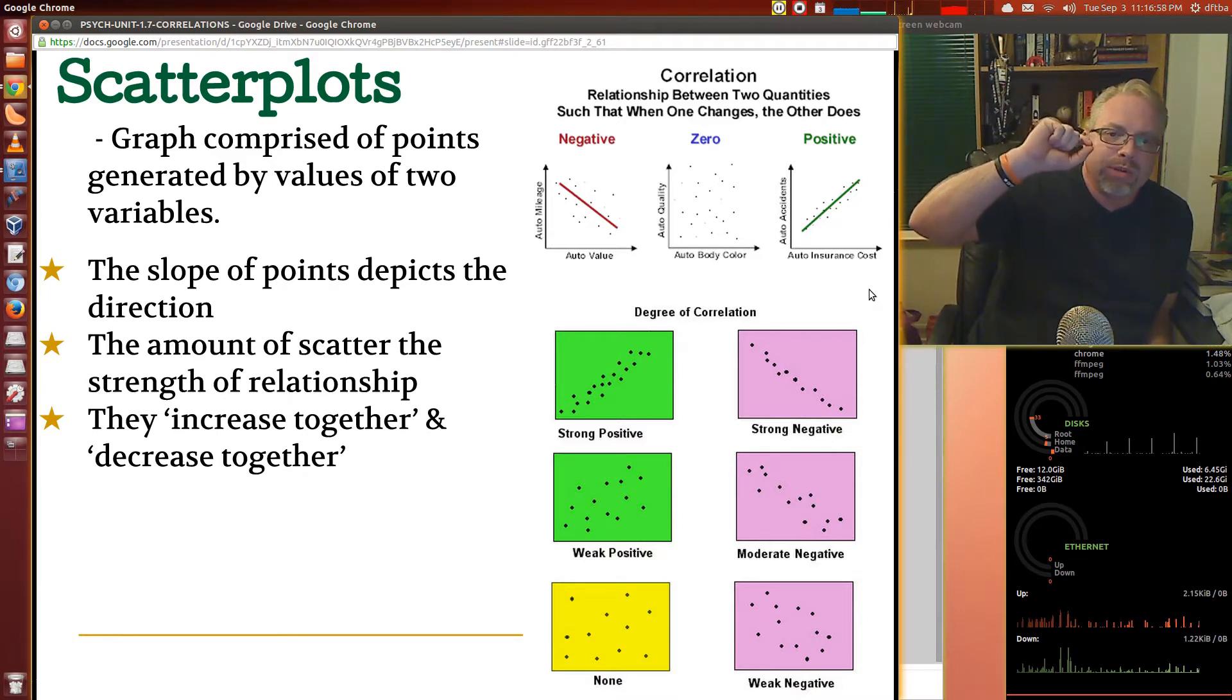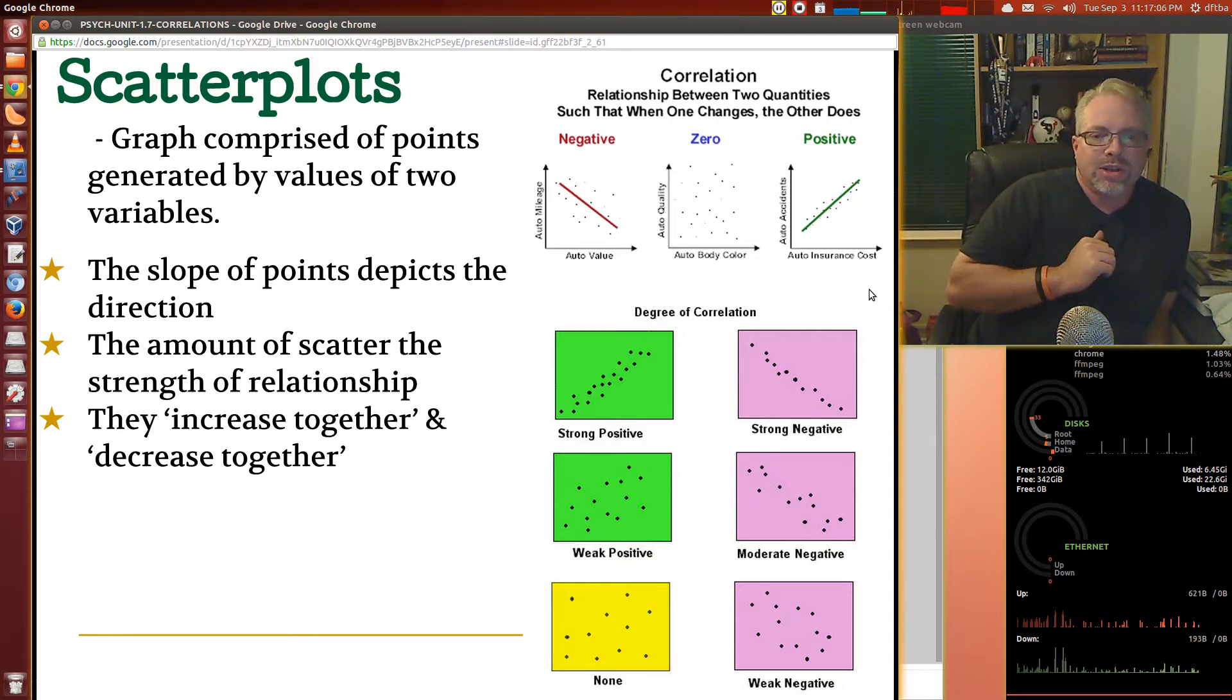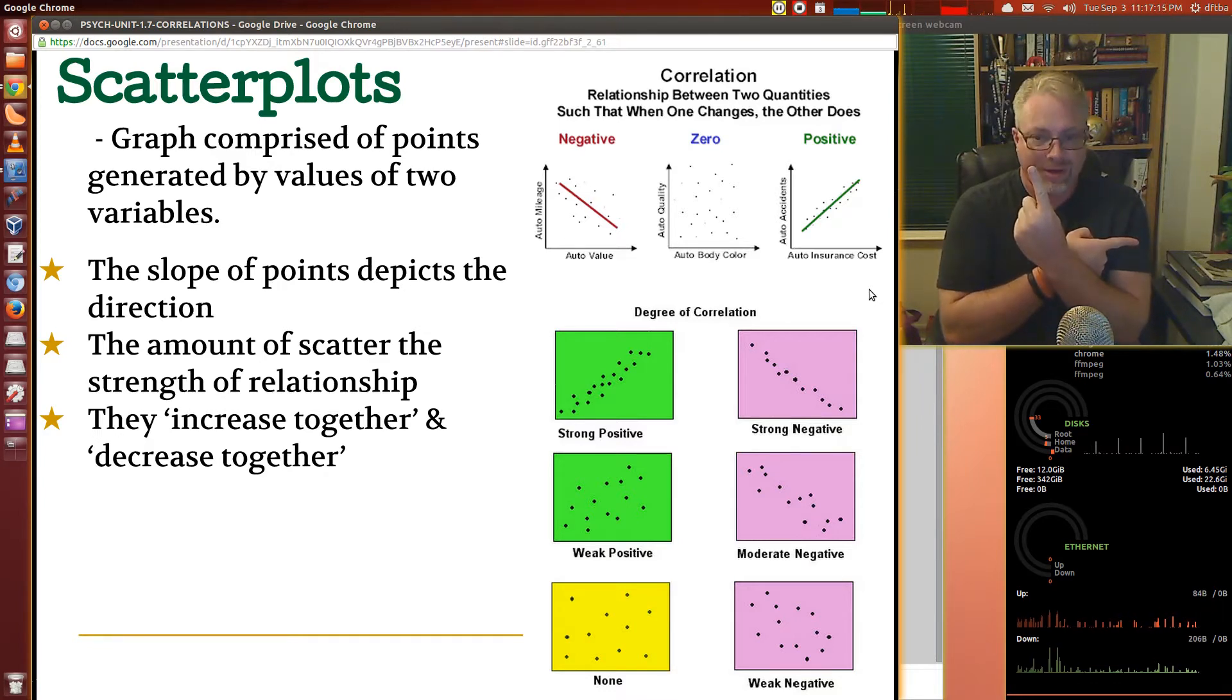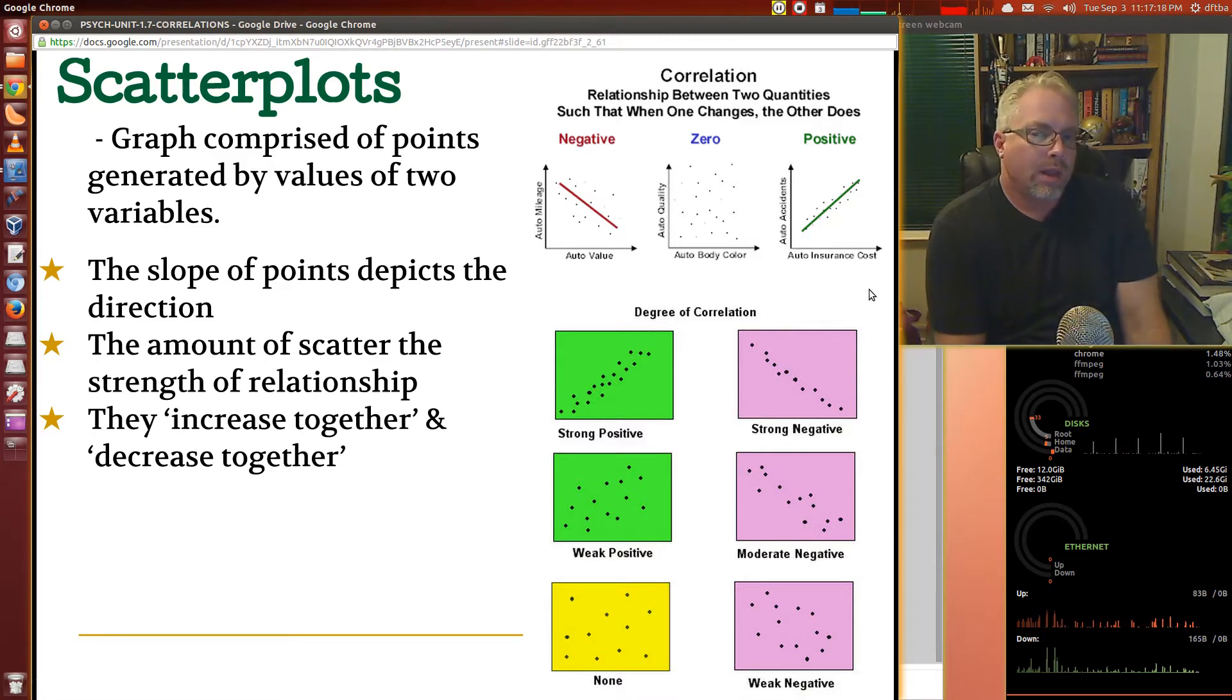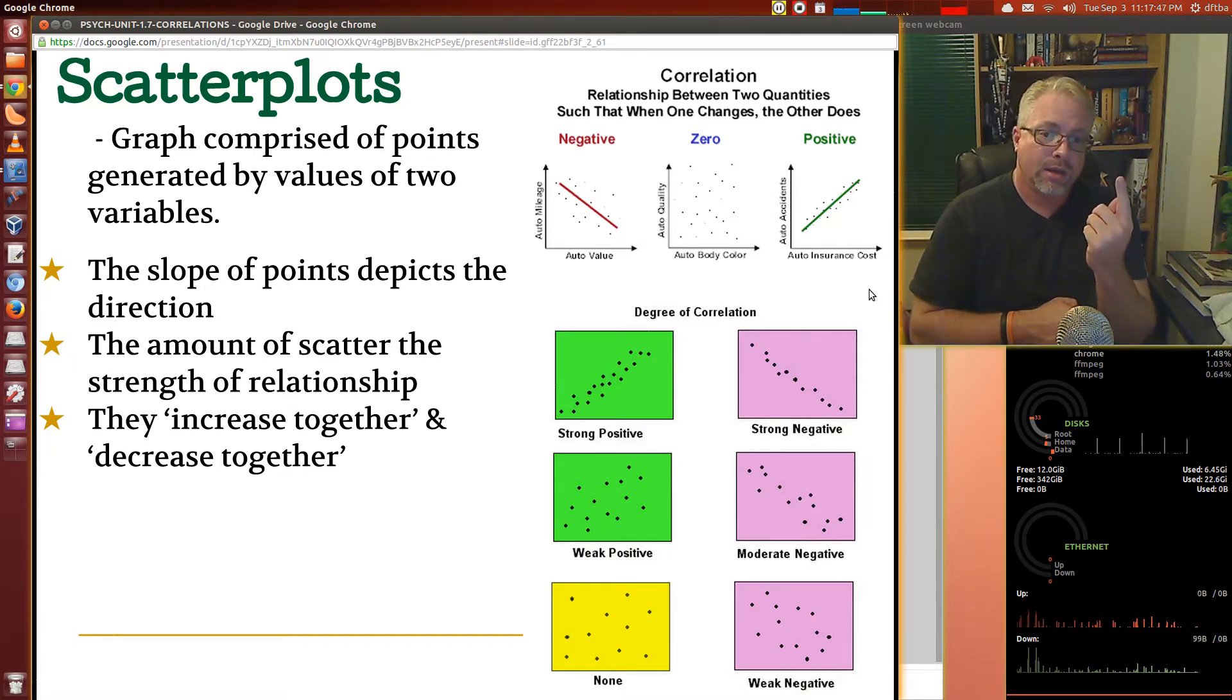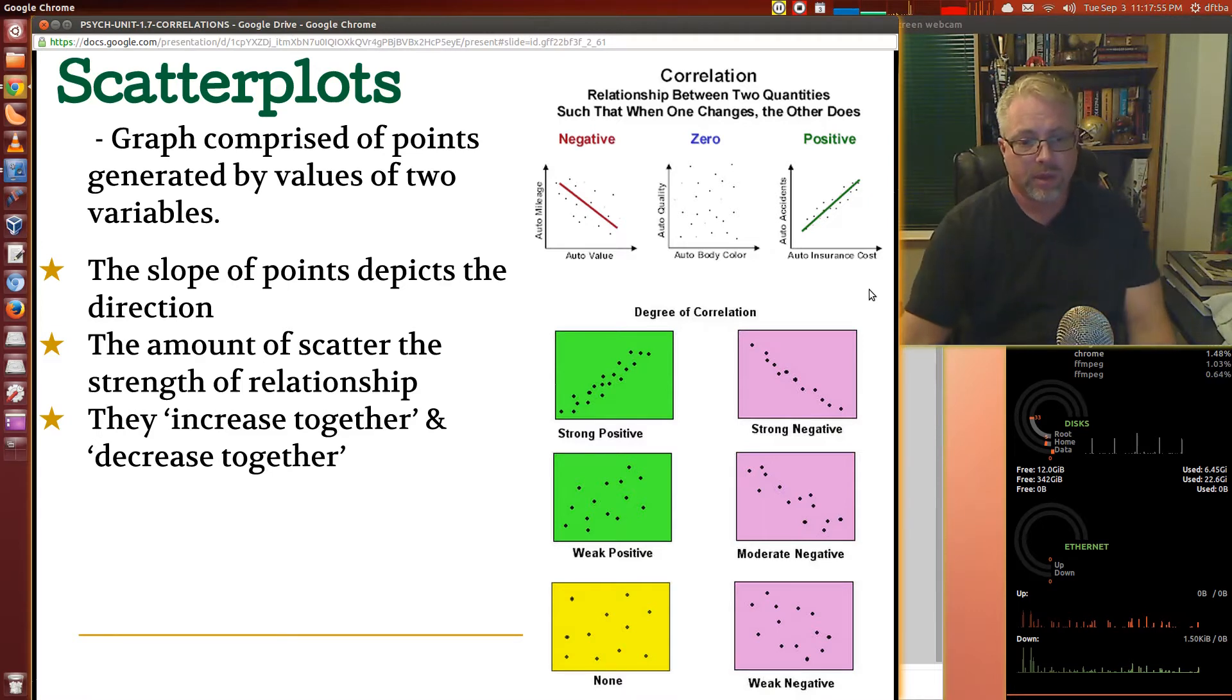Let's look at the top thing there. It says correlation: relationship between two quantities, such that when one changes, the other does. Auto mileage, auto value. Auto mileage increases. What happens to auto value? Auto value decreases. How about auto quality and auto body color? Is there a correlation? No. How about auto accidents and auto insurance costs? Auto accidents rise, and what happens to auto insurance costs also rise. Positive. The first one is negative. As mileage increases, you'll have the opposite occur with auto value. It goes down over time.